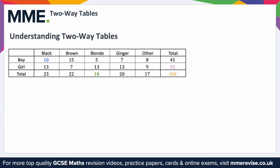Two-way tables show information about two characteristics: one presented in the columns and one presented in the rows. For example, the two-way table shown here shows information about the hair colour of a hundred children. The columns represent different hair colours — black, brown, blonde and so on — whereas the rows represent the gender of the child: boy or girl.